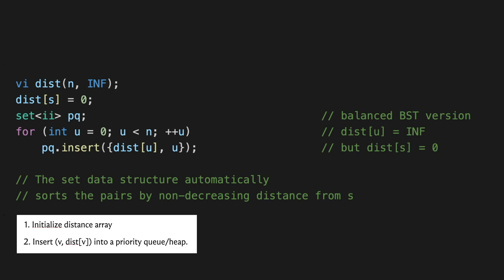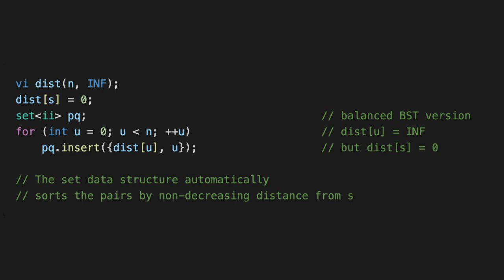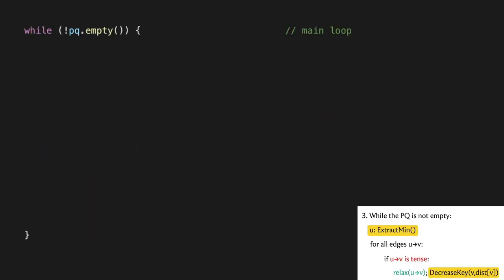Initially, s with distance 0 is the first element and the rest are tied at infinity. As the algorithm progresses the set maintains its sorted order, so you can always access the minimum element as the first element in the set. The outer while loop continues as long as elements remain in the set. Inside the loop, the first step is to extract the minimum element — the vertex closest to the source.